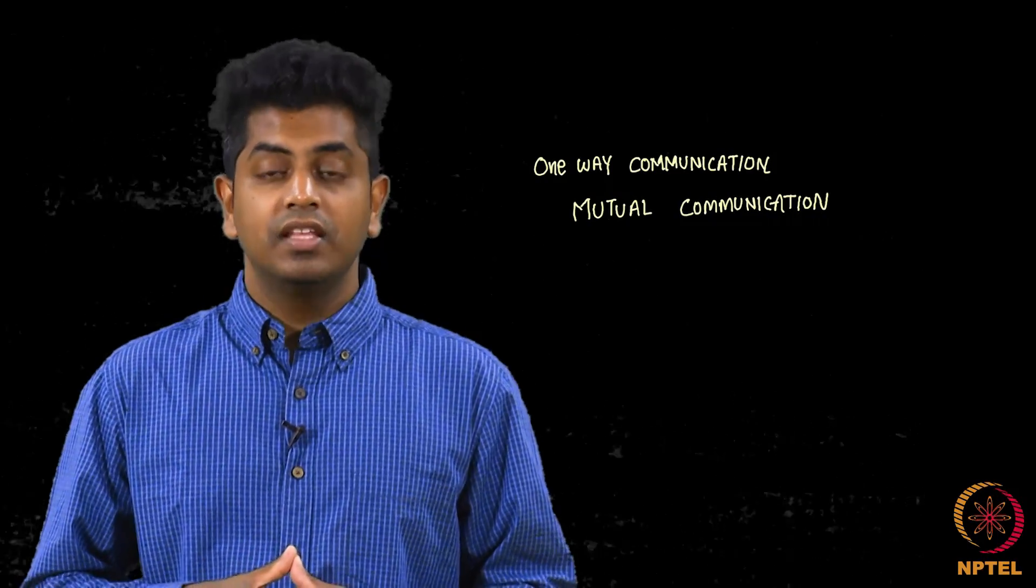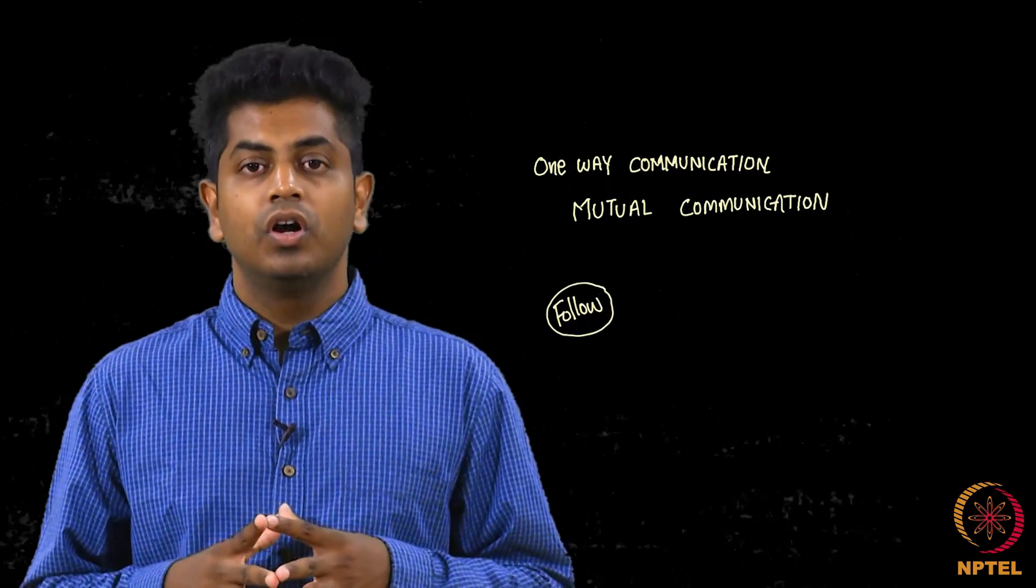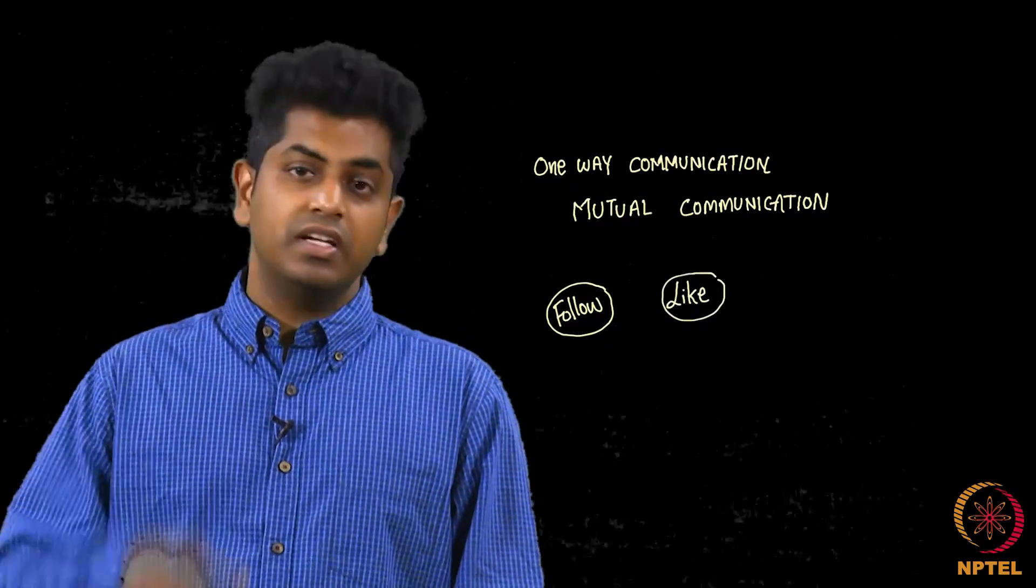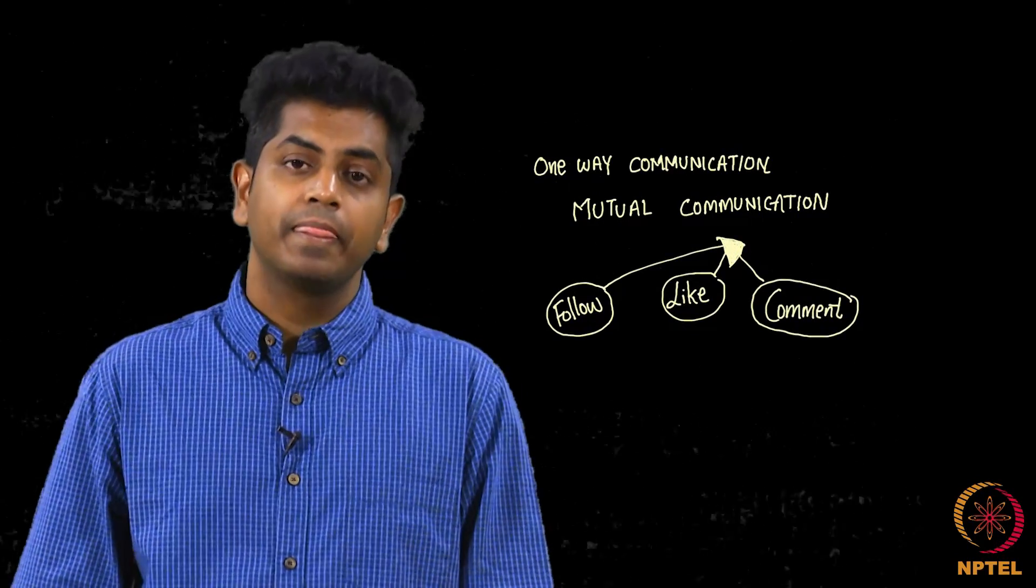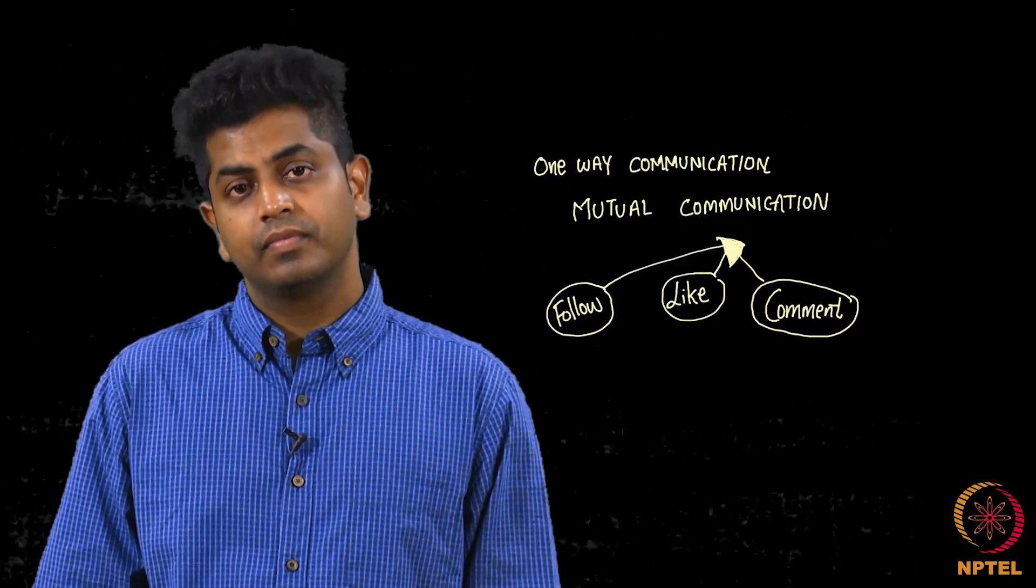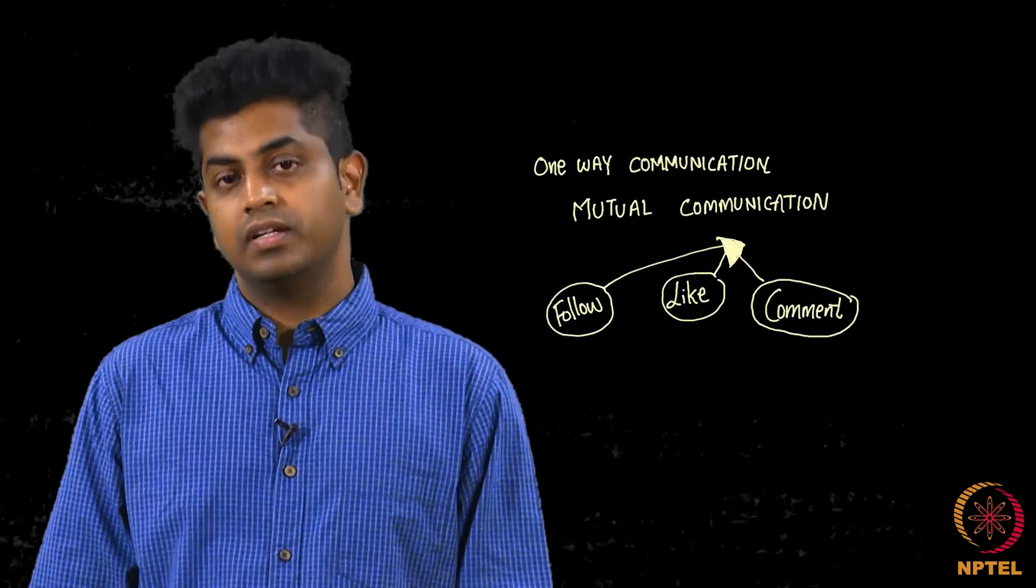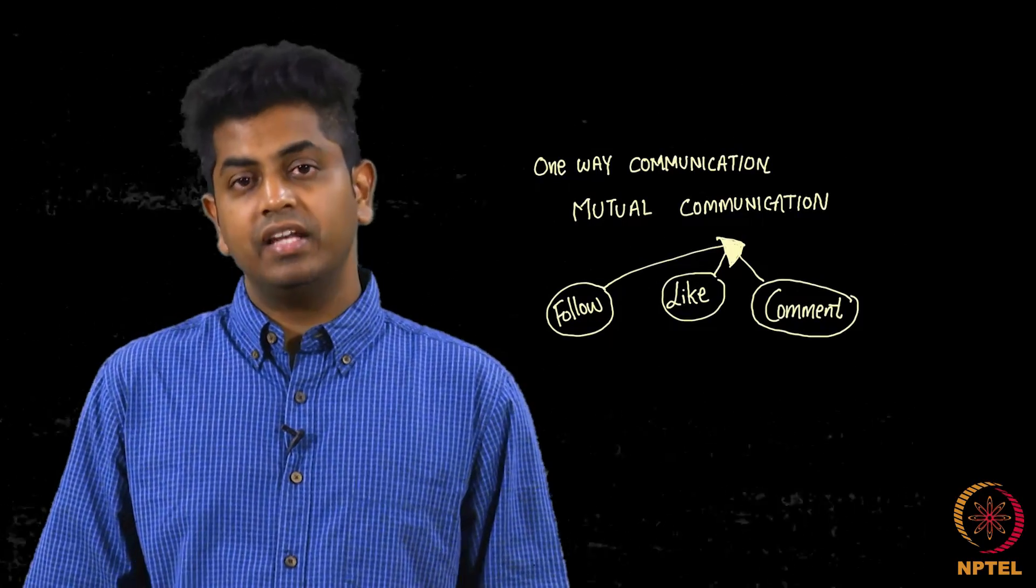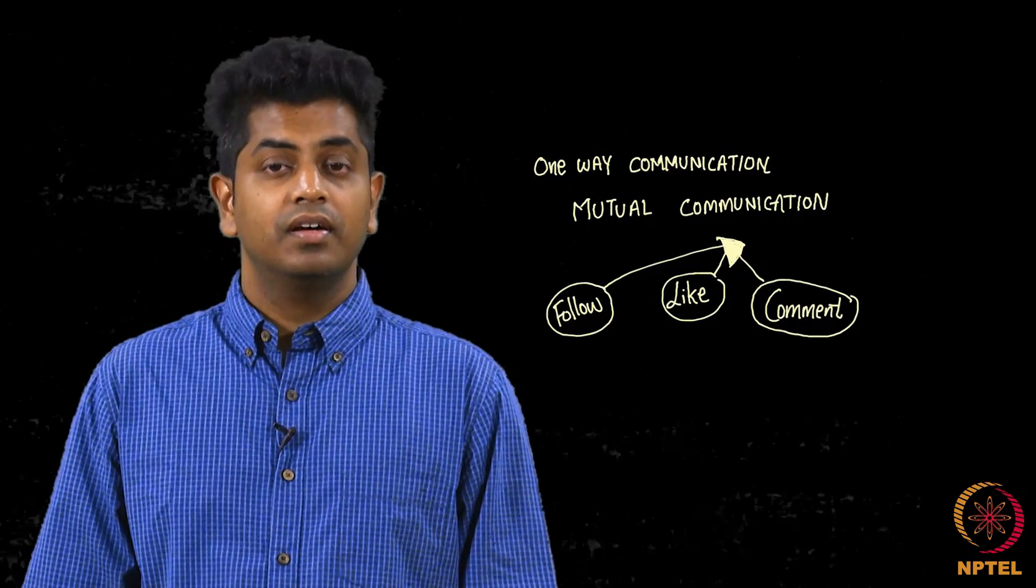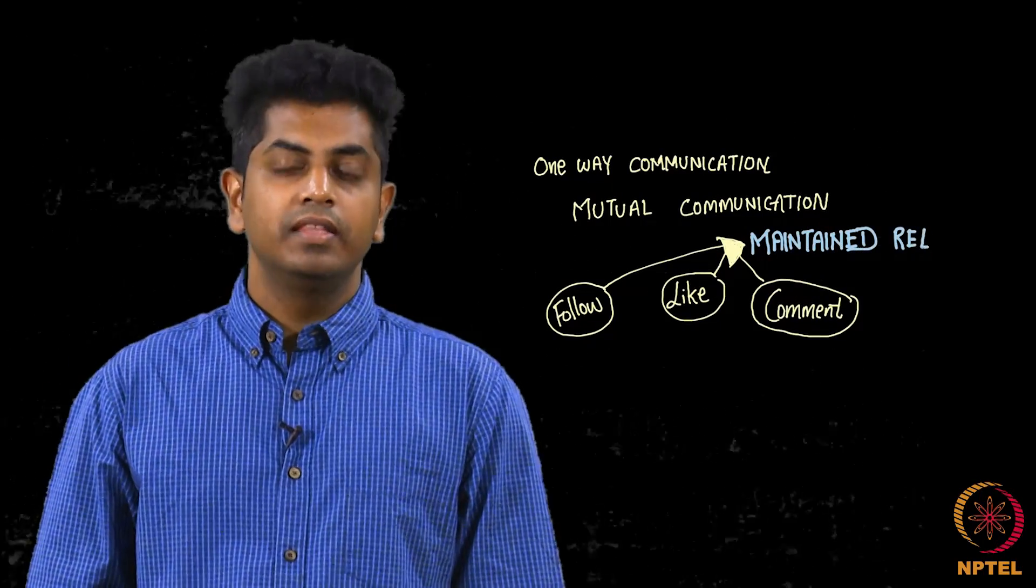There is a third type as I was telling you. The third type is if a person is following you on your timeline, on whatever is happening with you, whatever news you keep posting, he comes and clicks on like or comments there and things like that, right? I call it the third type. So what is so interesting about this third type? Think about it. Is the third type better than one way communication or is it less than mutual communication? Let us think about it for a minute. So this third type is called the maintained relationships.